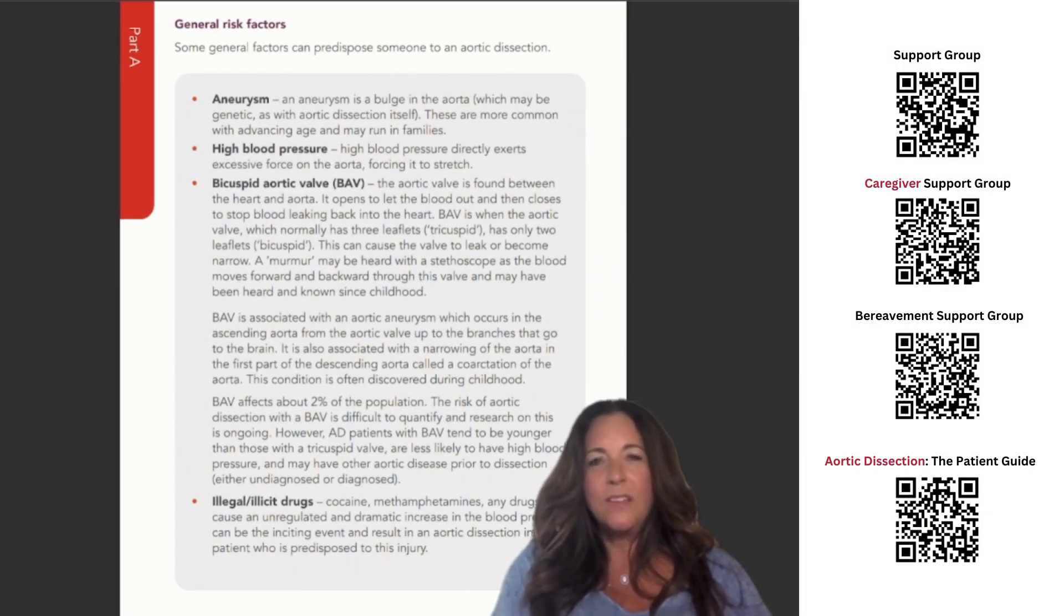General risk factors. Some general factors can predispose someone to an aortic dissection. Aneurysm. An aneurysm is a bulge in the aorta which may be genetic, as with aortic dissection itself. These are more common with advancing age and may run in families.